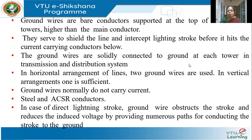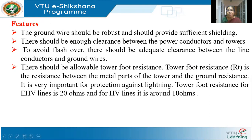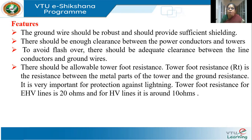Now let us see what features the ground wire should have. It should be robust and provide sufficient shielding. The ground wire itself should not melt — because the lightning stroke will have a lot of energy, the ground wire must be able to withstand that. There should also be proper clearance between the conductors and the ground wires, and between the ground wire and the tower.